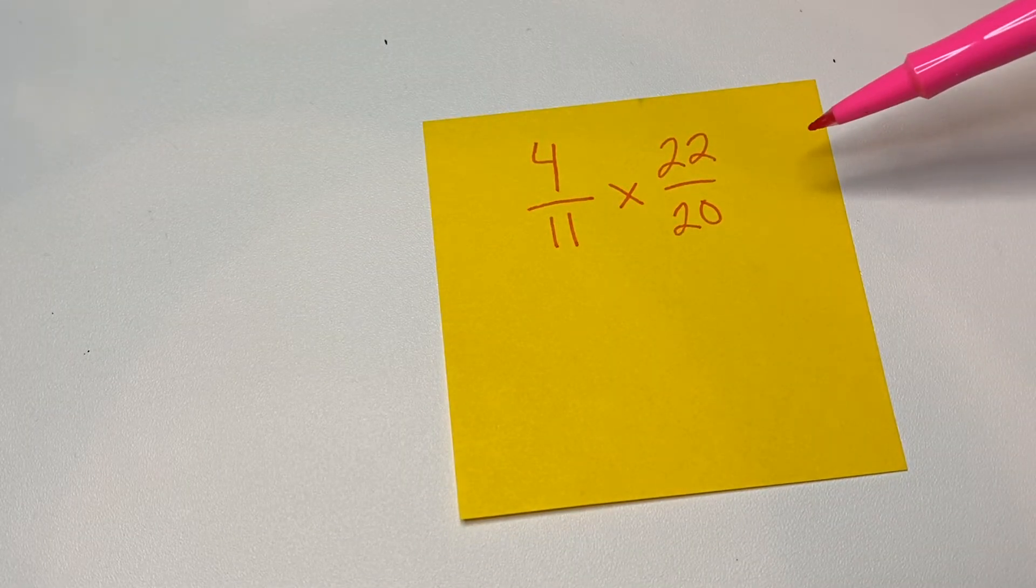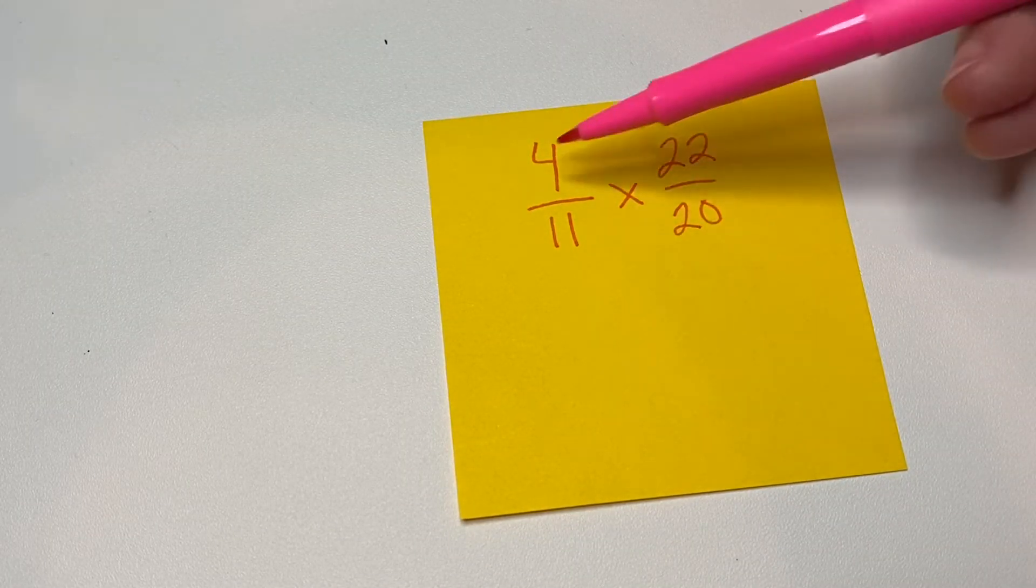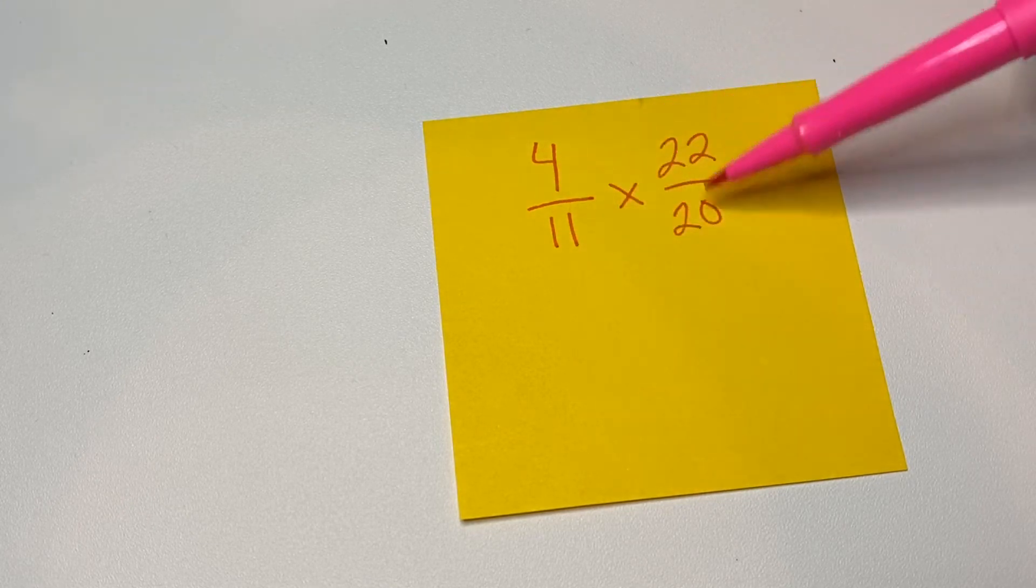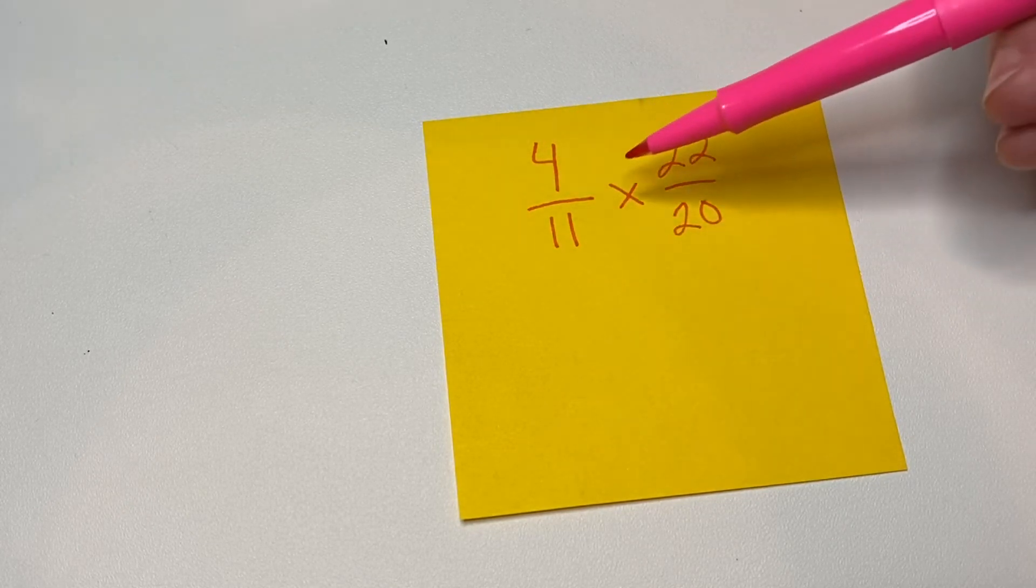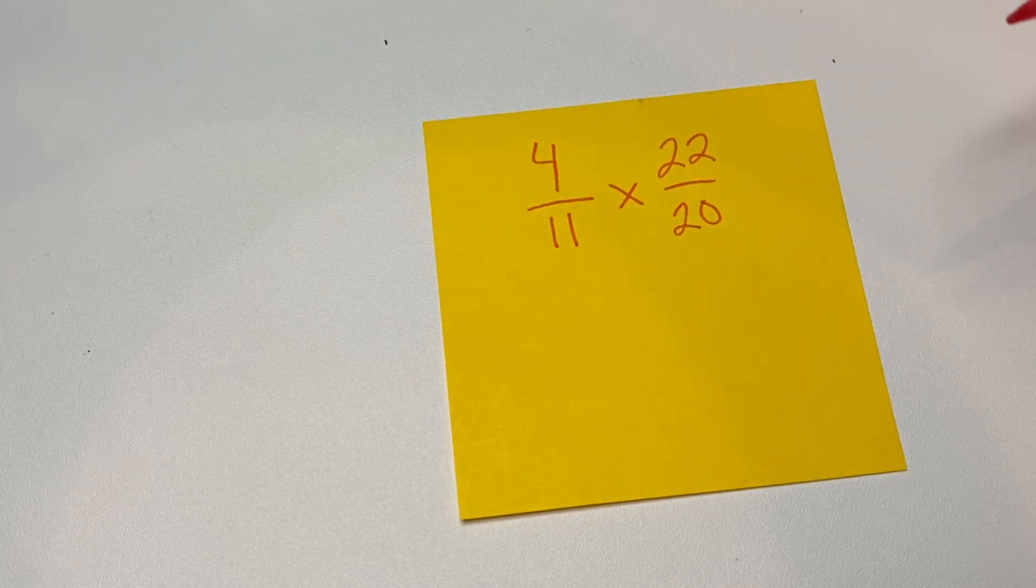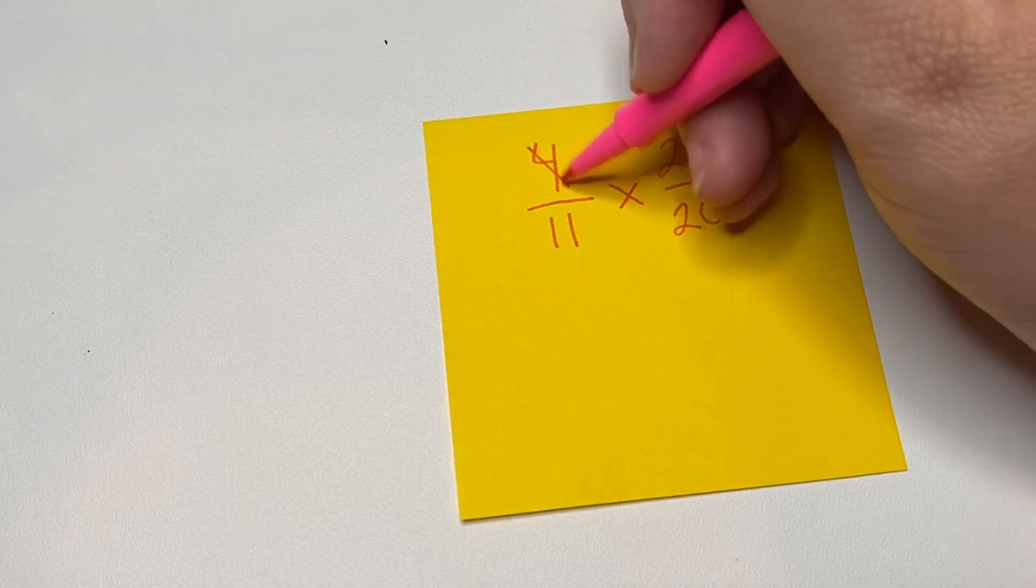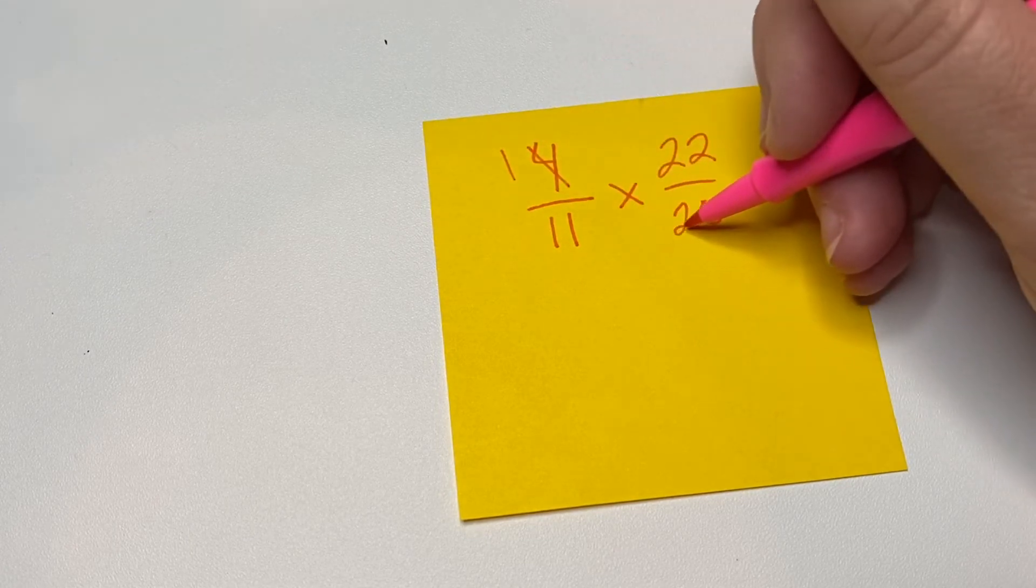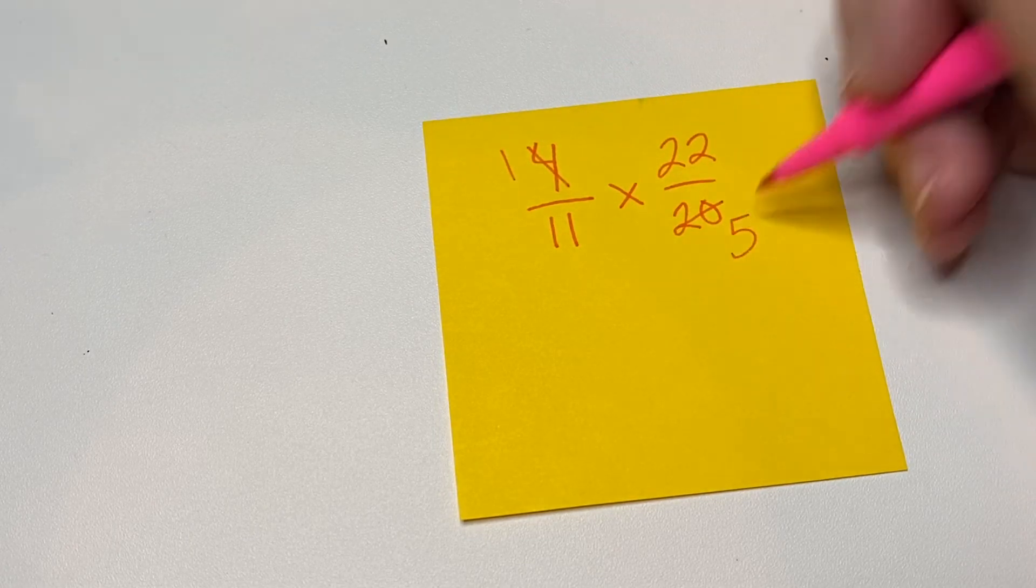So we're going to try to cross cancel here. It can be up and down, but we're going to go this way. So is there a factor that goes into four and into 20? Yes, it's four. Four goes into four one time. Four goes into 20 five times.